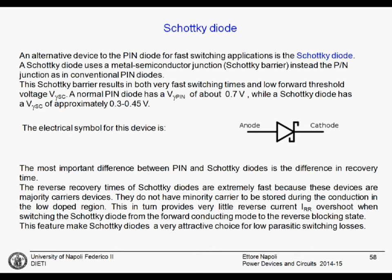The conventional PIN diode has a threshold voltage of about 0.7 volts, while for a Schottky diode, depending on the height of the barrier, we have 0.3 to 0.45 volts. The electrical symbol of the device has a line that becomes an S.